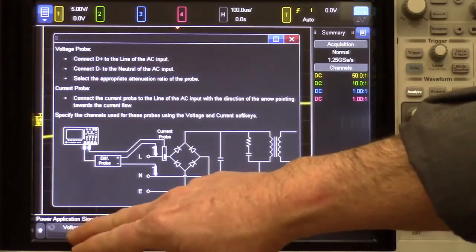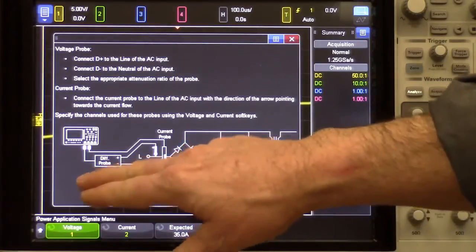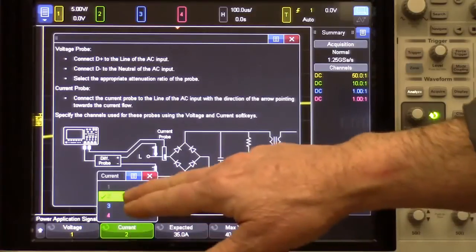You can also assign which input is voltage. In this case, it's channel 1. We'll just leave it there. Current is channel 2.